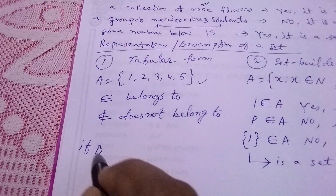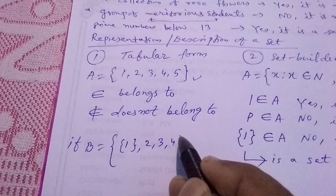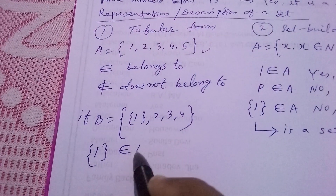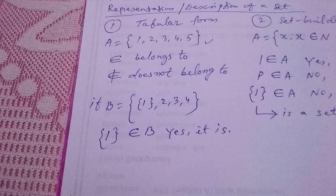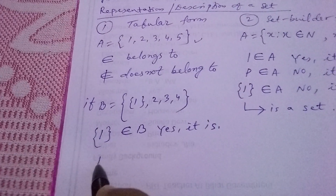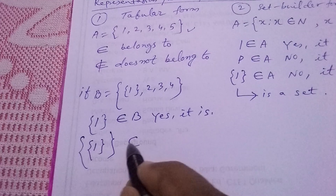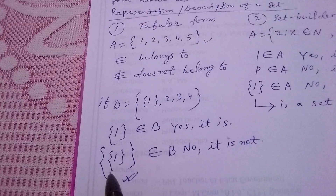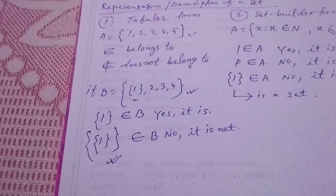But if B is a set in which {1}, 2, 3, 4 are elements, then 1 ∈ A and {1} ∈ B — yes, that is correct. However, {{1}} ∈ B — no, it is not, because {{1}} becomes a set, and that set is not present in B. Here {1} is an element of B, not {{1}}.